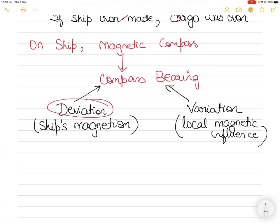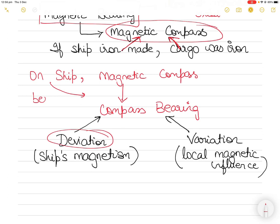You cannot completely eliminate deviation — you cannot make it zero. So on the ship, the bearing you get from the magnetic compass is not called magnetic compass bearing; it's called compass bearing, because it is influenced by the ship's magnetism. On the ship you have only two bearings: true bearing and compass bearing. There is nothing called the magnetic compass bearing on a ship.